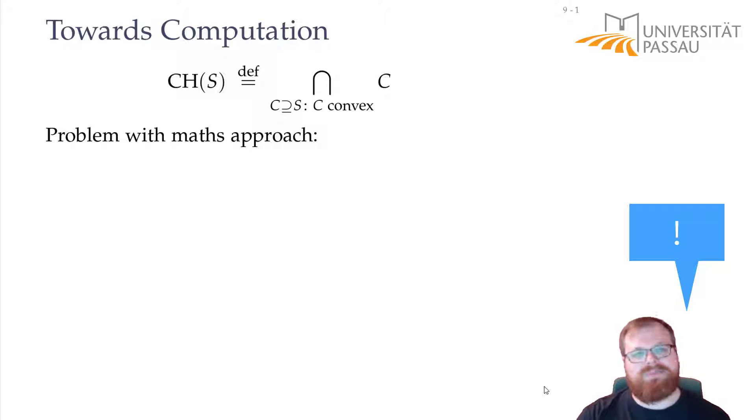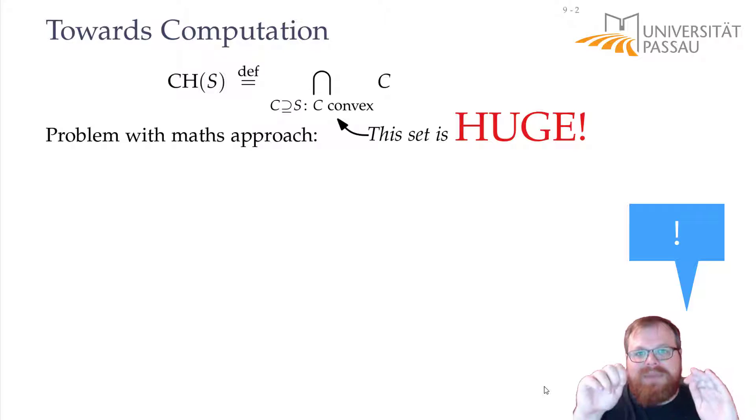The problem with this approach is that this set is huge. This is an infinite number of sets. Just take any convex point set and make it larger by just a single point, and you have another convex point set that also contains our point set. So, this is not feasible. We cannot really compute this. We need a better way. We need to be smarter. We cannot look at all the convex sets, but we have to find a subset of them. Can you think of a way that helps us to reduce the number of convex sets?